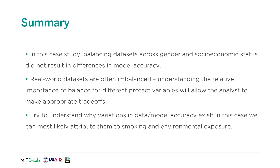In summary, we found that representativeness across the protected variables of gender and income do not play a large role in model accuracy for this example on pulmonary diseases in India. As part of building a machine learning model, it is always important to check what effects, if any, protected attributes may have on the model. In the real world, it will be impossible to find perfectly balanced datasets, and tests such as the one described can be used to check for the effect of representativeness across protected variables on data and model accuracy. It is important to understand these trade-offs so that you can make informed decisions when building models. Thank you for taking the time to watch this case study, and we hope that you'll watch the other content in the series.